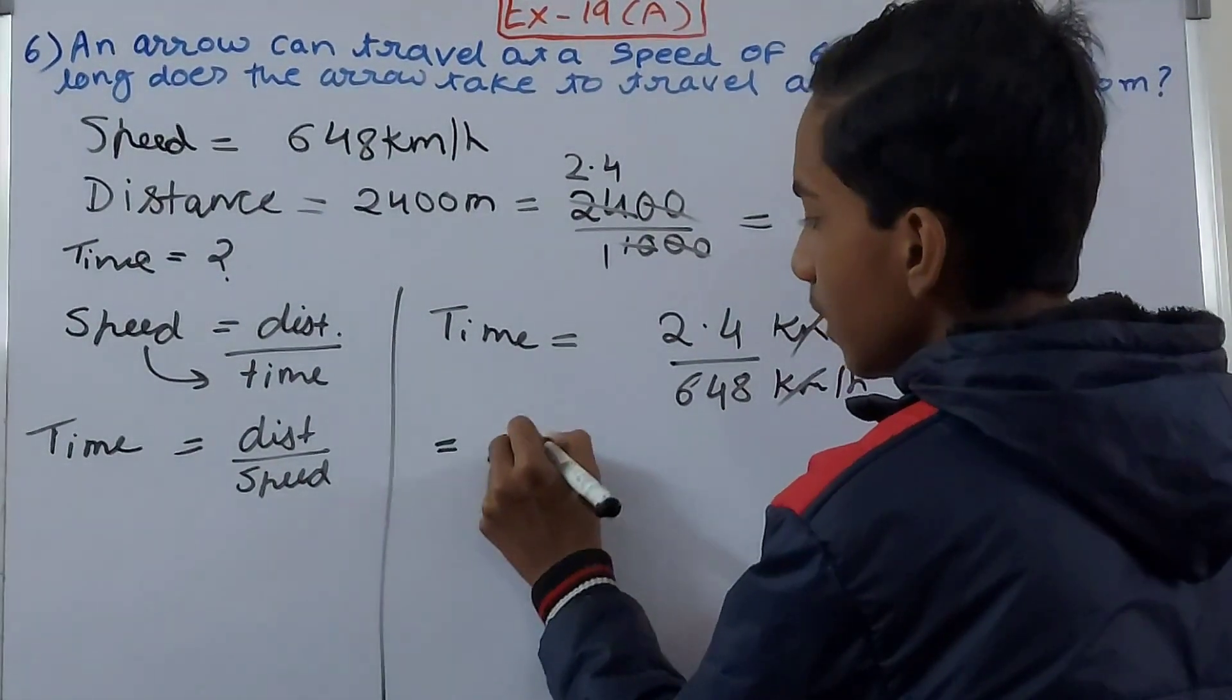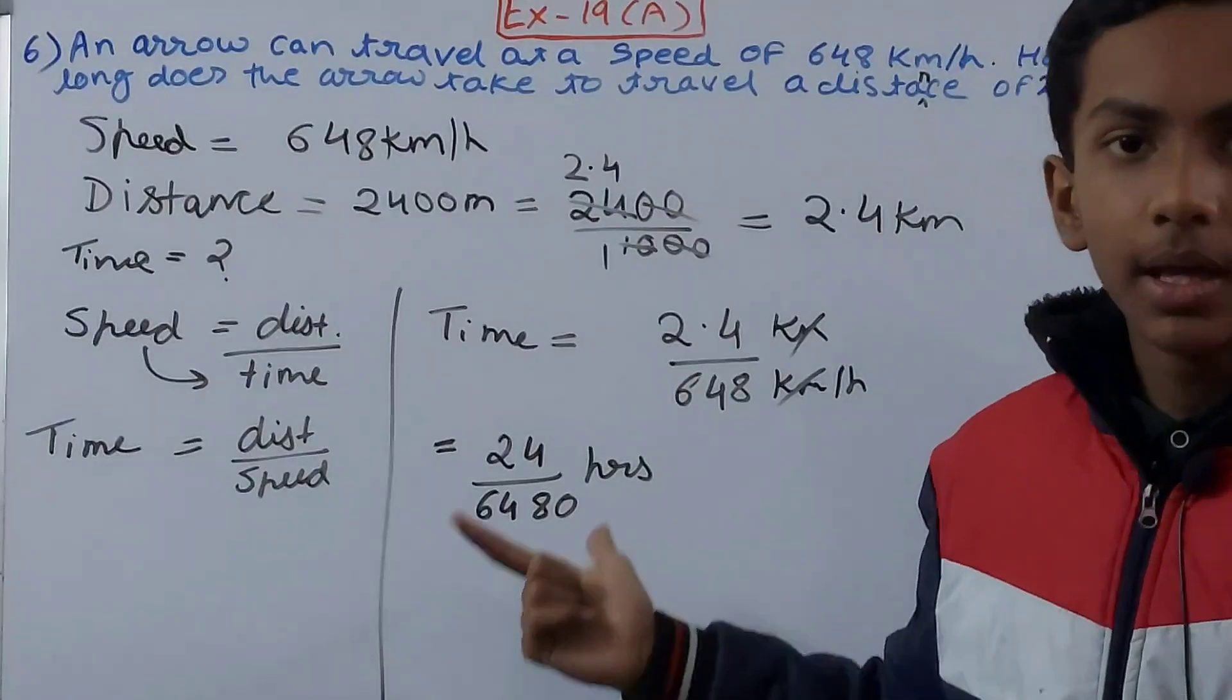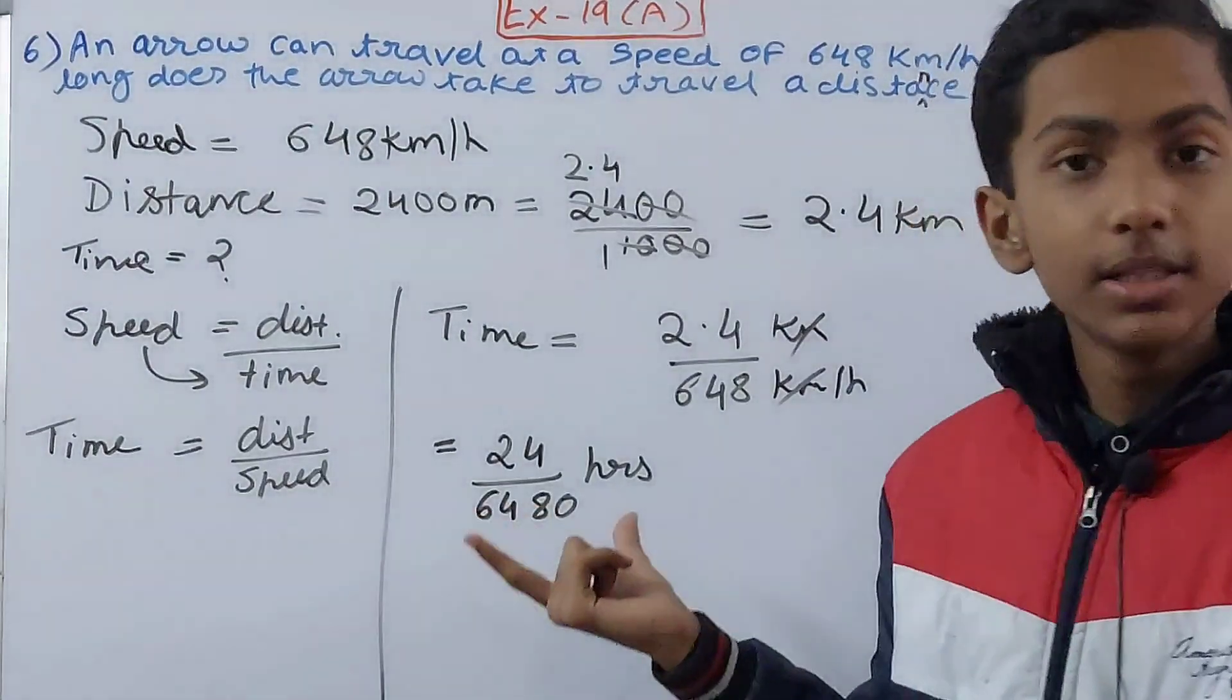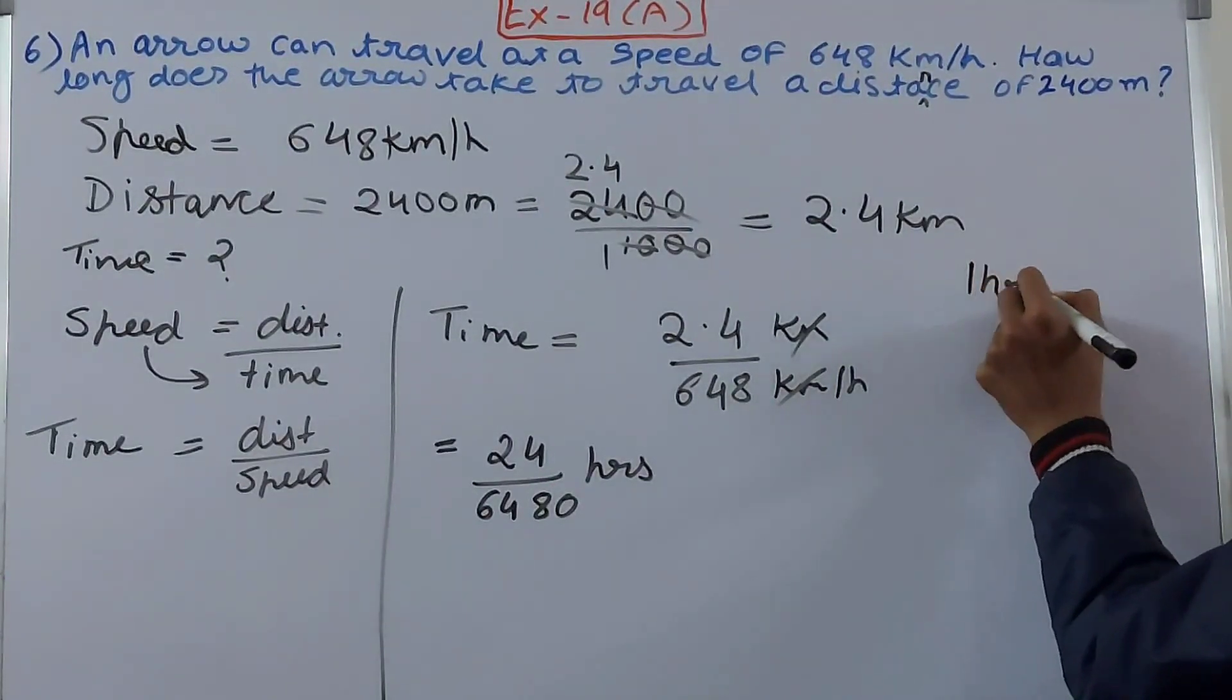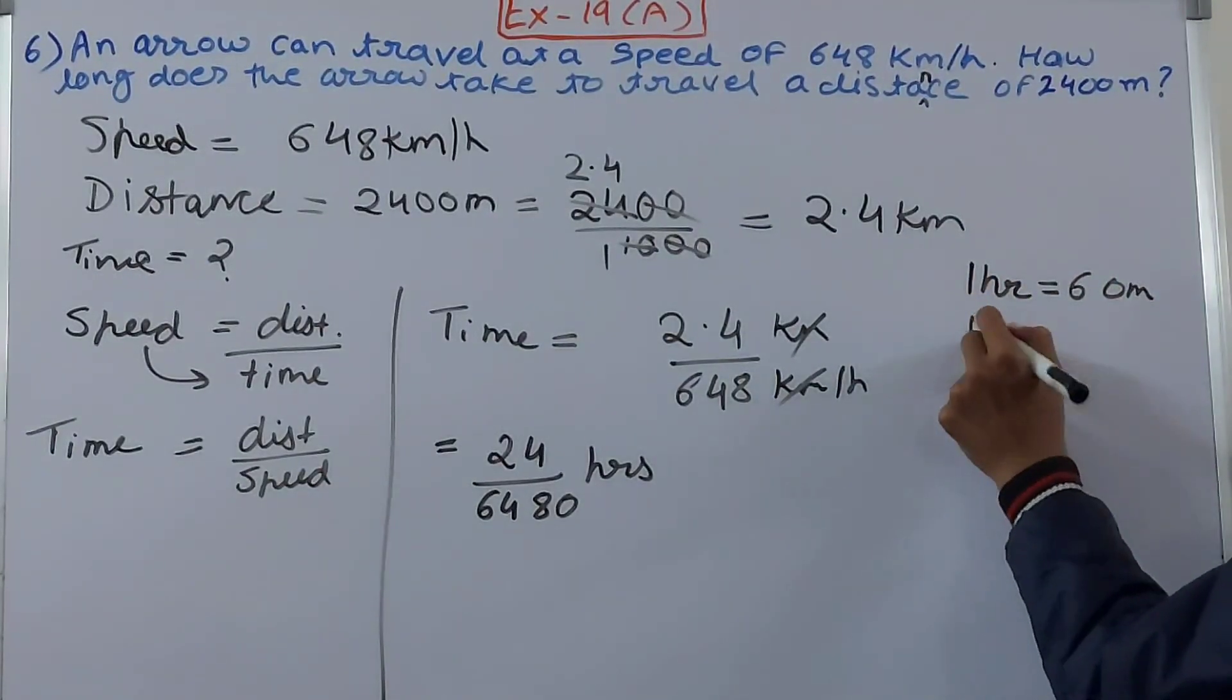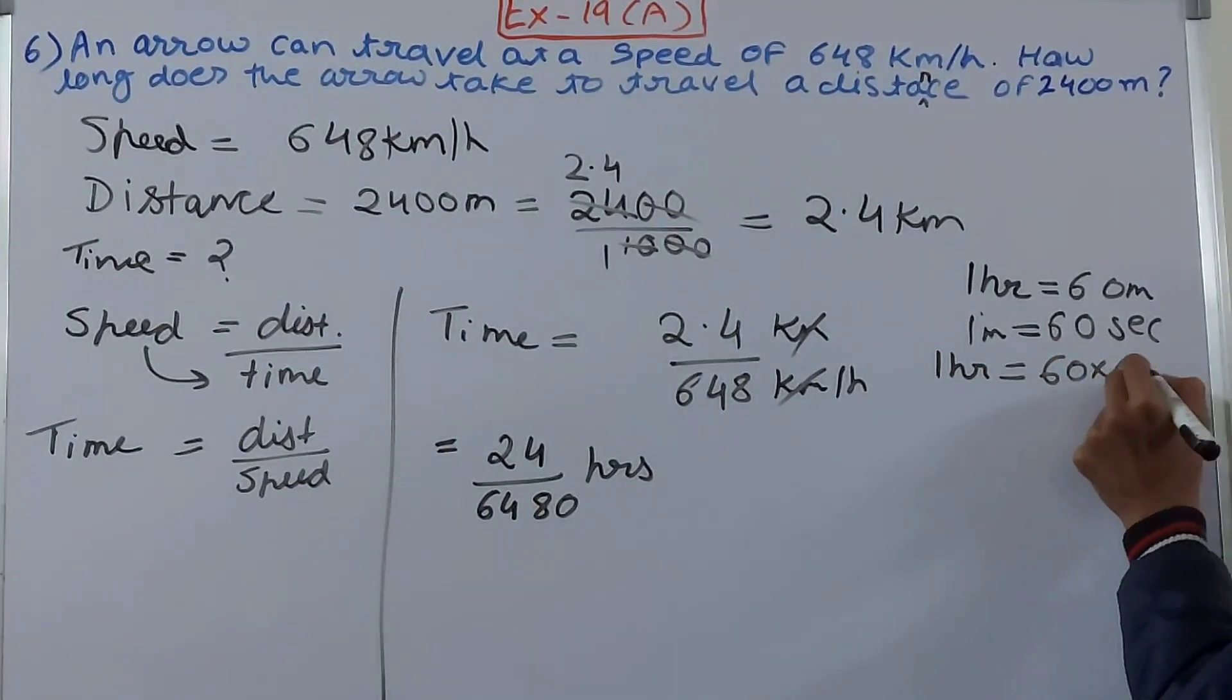See this: this becomes 24 upon 6480 hours. This becomes the time. Now we will convert this hours into seconds. So multiply it here. We know that in one hour there are 60 minutes, and in one minute there are 60 seconds.